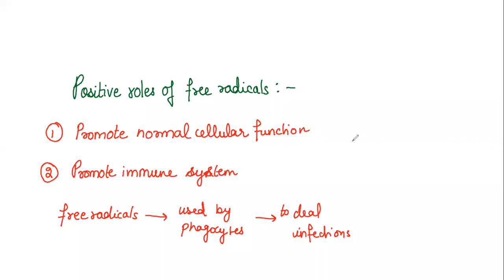Now let's see some positive roles of free radicals in our body. At normal low concentrations during metabolic processes, free radicals promote the integrity of the body and promote the immune system. Free radicals are generated on a daily basis and are utilized by phagocytes, mainly macrophages, T cells, and NK cells. They require free radicals to fight infection and promote a healthy living system.